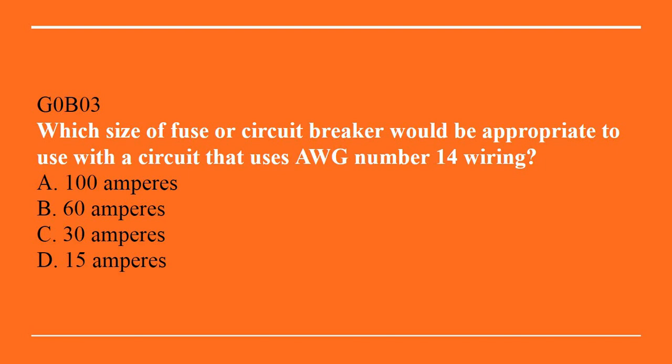G0B03: What size of fuse or circuit breaker would be appropriate to use with a circuit that uses AWG number 14 wiring? A, 100 amperes. B, 60 amperes. C, 30 amperes. Or D, 15 amperes. Correct answer is D — 15 amperes.